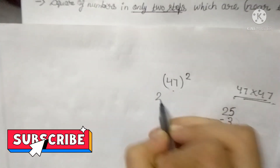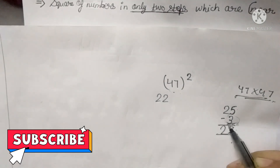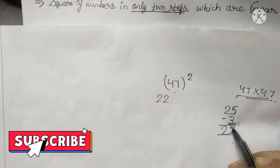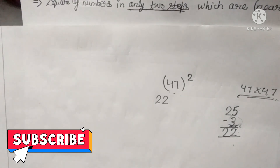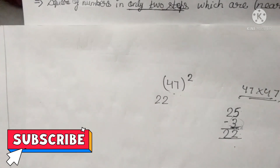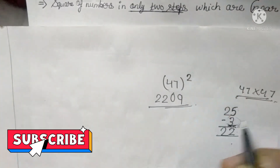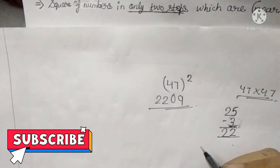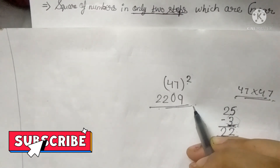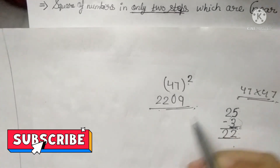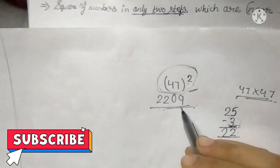So we write 22 here. The second step is: we take this 3 and find its square. We all know the square of 3 is 9. So we write 9 with a leading 0, making it 09. So the square of 47 is 2209. You can verify in a calculator — the square of 47 is indeed 2209. Simply in two steps, we found the square of 47.